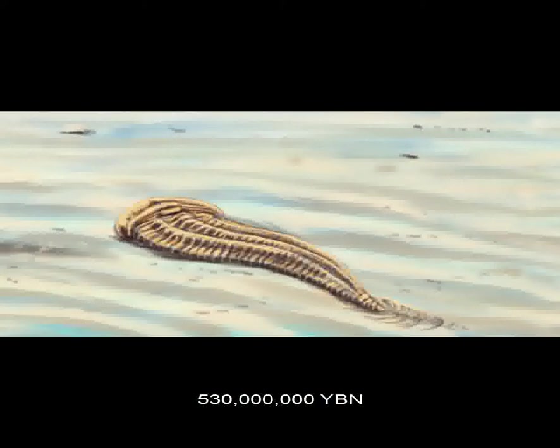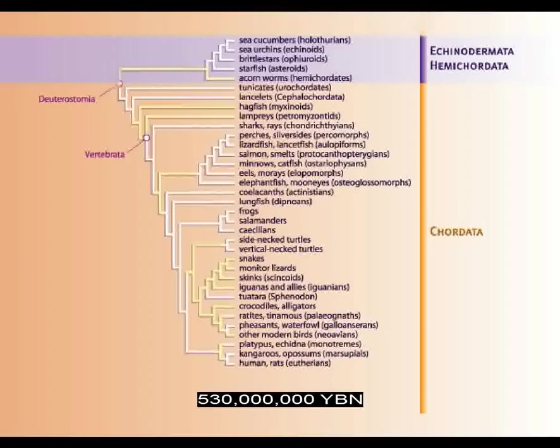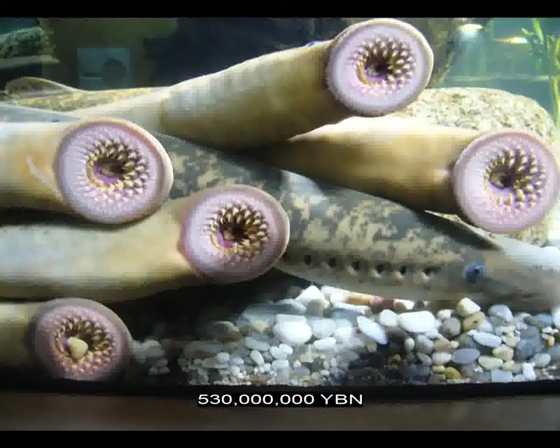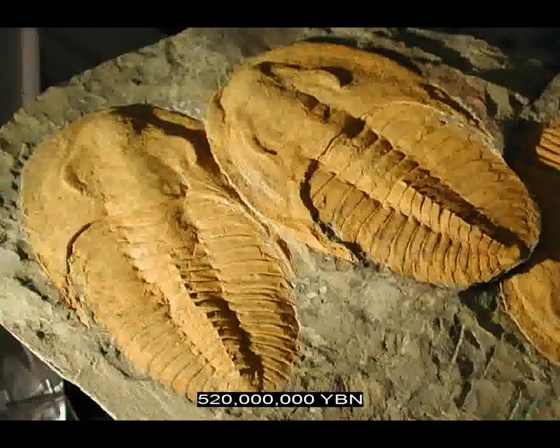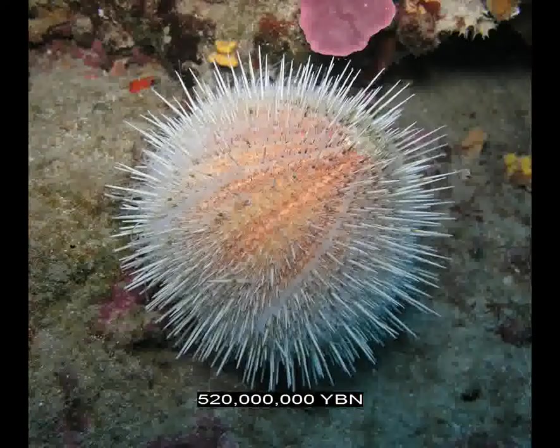Trochozoa annelids — segmented worms. Ecdysozoa tardigrades. Ecdysozoa onychophorans evolve — a transition between worms and arthropods; they have segmented worm-like bodies but with appendages like arthropods. Chordata vertebrates evolve — this subphylum contains most fishes and all amphibians, reptiles, mammals, and birds. Vertebrates jawless fishes evolve — Agnatha. The arthropods trilobites evolve. Deuterostome echinoderms: sea cucumber, sea urchin, sand dollar, starfish.